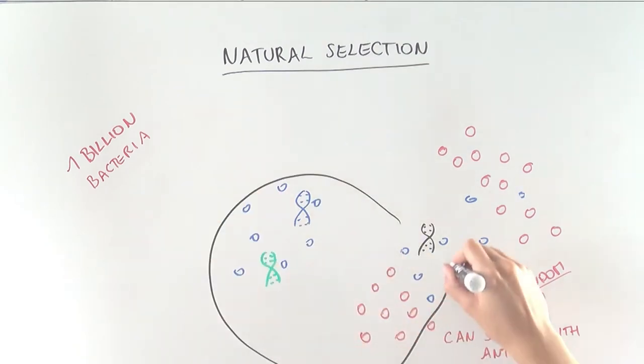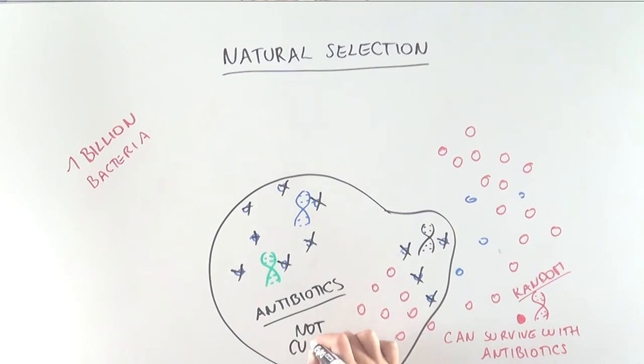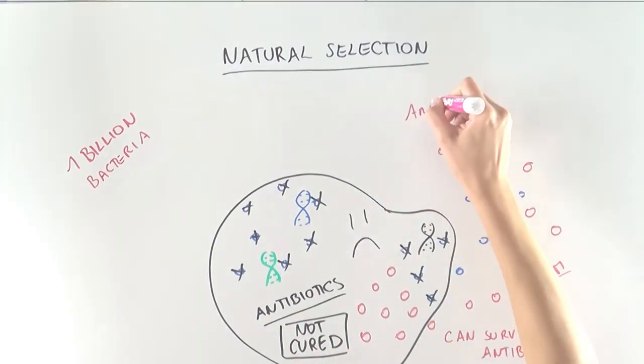Now, in this new scenario, if we are infected, antibiotics won't be able to cure us, since the red bacteria have a special DNA sequence that allows them to survive with antibiotics. We call them antibiotic resistant.